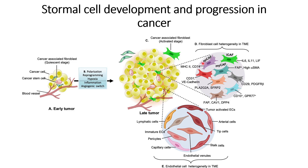Some cancer-associated fibroblast categories have been identified in different cancers — for example, AP cancer-associated fibroblasts, immunomodulatory cancer-associated fibroblasts, myofibroblast cancer-associated fibroblasts, and others. One role of these cancer-associated fibroblasts is to help the tumor microenvironment towards immunosuppression, and they also act as a physical barrier to prevent immune cells from immune surveillance.